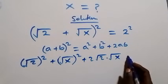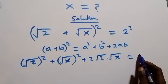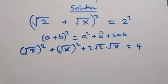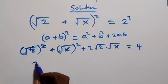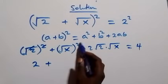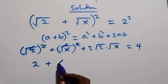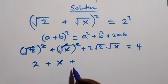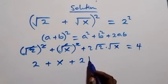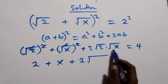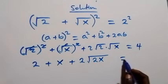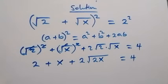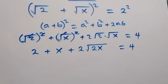Which is now equals to 2 squared, that is the same as 4. Then from here, square cancels square root, we have 2, then plus — square cancels square root — we have x, and here we have plus 2 root 2x, which brings this together and becomes 2 plus x plus 2 root 2x equals to 4.